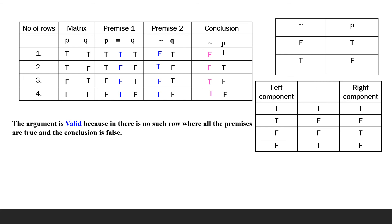Now check whether the argument is valid or invalid. In the second premise row 1 is false, so no need of checking. First premise is false in rows 2 and 3, no need of checking. We have not found any row where all premises are true and the conclusion is false. So the argument is valid — no invalidity condition is found. We will continue this exercise to test the validity of arguments in the next class. Thank you.